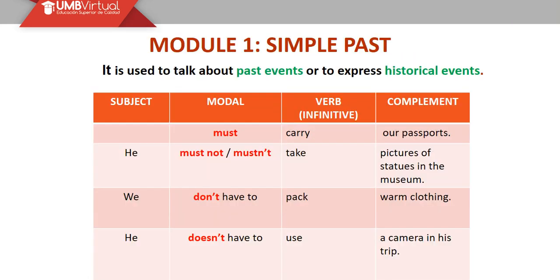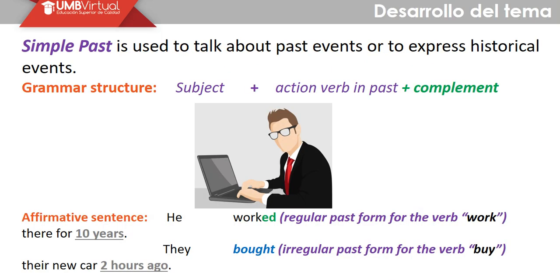Simple past: we use it when we really want to express past events or historical events, or when we want to narrate an experience. The grammar structure is: subject plus action word in past plus complement. For affirmative sentences: 'He worked there for 10 years' — regular past. Or 'They bought their new car two hours ago' — irregular past of the verb 'buy.'